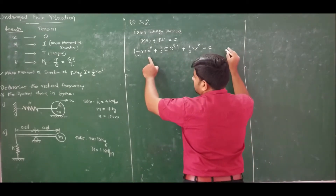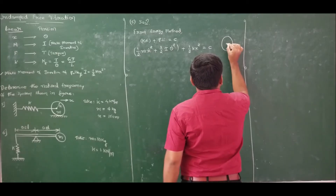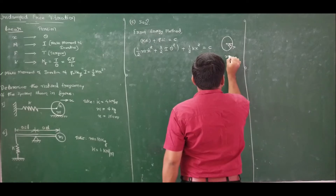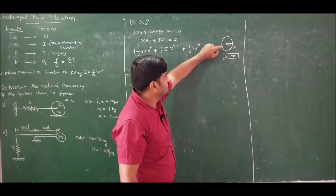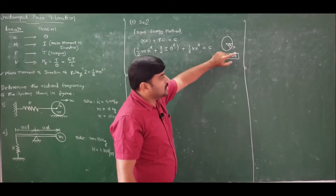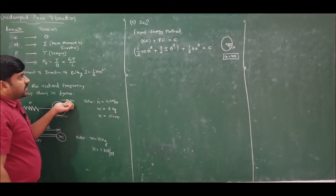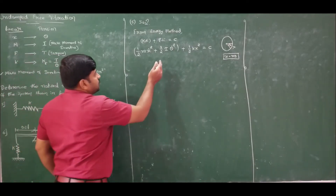Now, what is the value of x? If the pulley rolls over the surface and makes an angle theta, then x is equal to r theta. When the pulley rolls over the surface, it is subject to both torsional vibration and linear movement. Therefore, the relationship between x and theta is x = r theta.